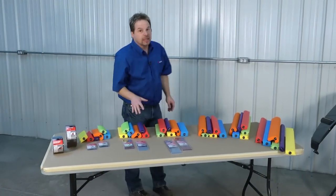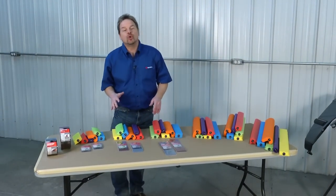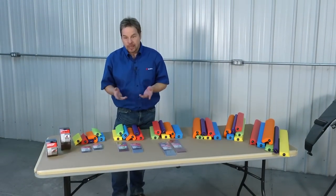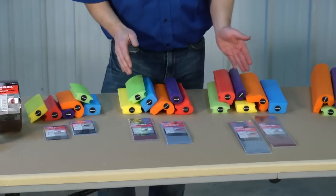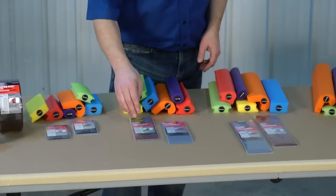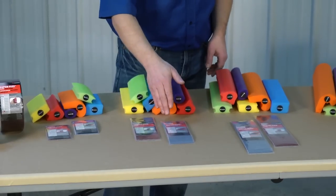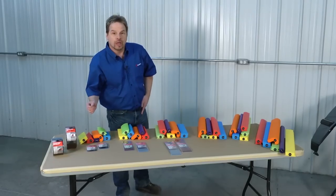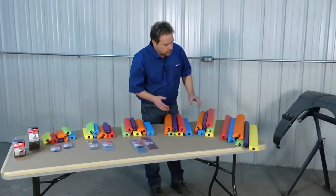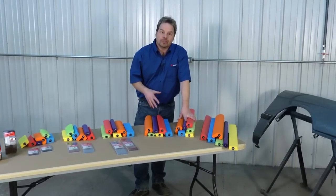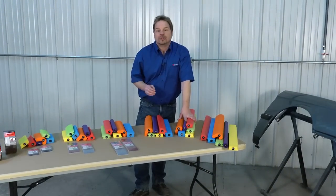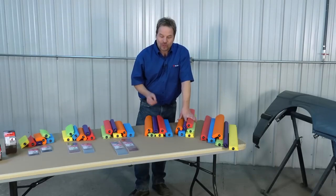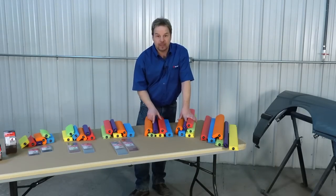Now the flex sanders and the super flex adhesive paper are designed to work together as a system. As a matter of fact, the 5, 8 and 11 inch block kits come with a pack of both the cloth and the wet or dry paper in the kit itself. Or you can get individual rolls of the cloth or wet or dry paper just like the longer boards. But for now we're going to show you how you can save time and make money with these tools.